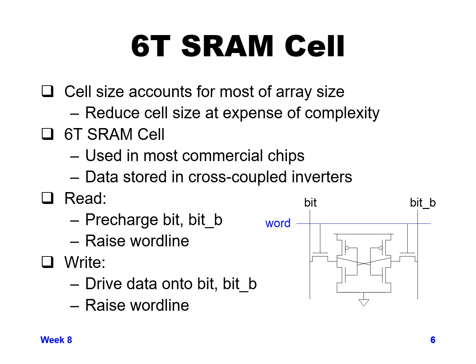For writing, we drive a data value onto bit and bit-bar — bit high and bit-bar low, or vice versa. Then we raise the word line. Since bit and bit-bar are actively driven, we need to make sure they are driven strongly enough to override the value stored inside the data bit and write a new value into it.